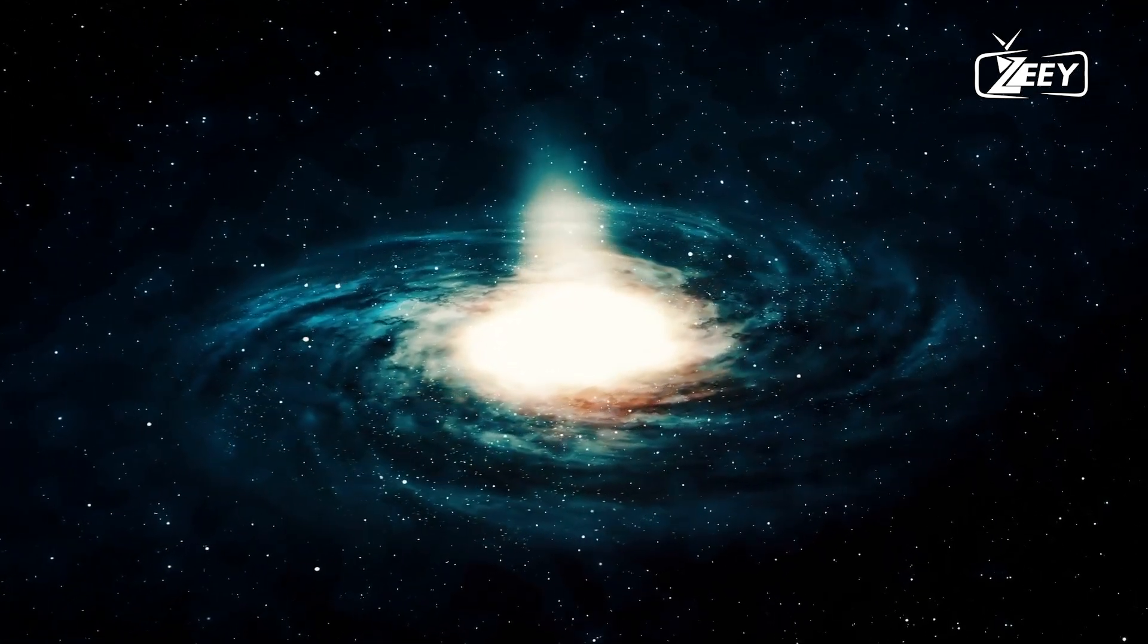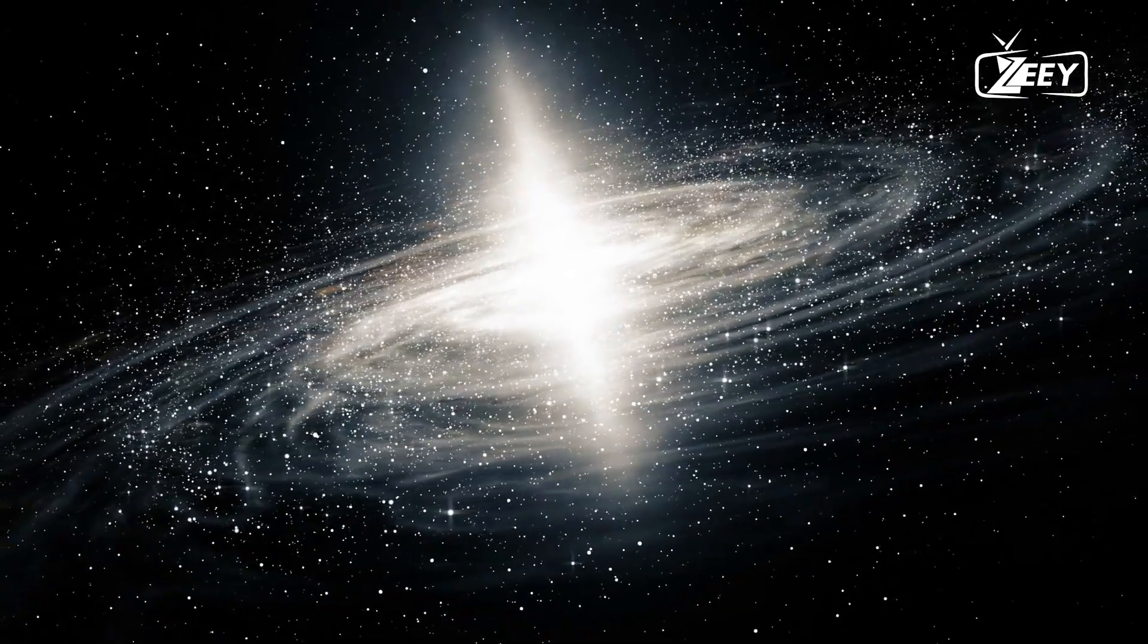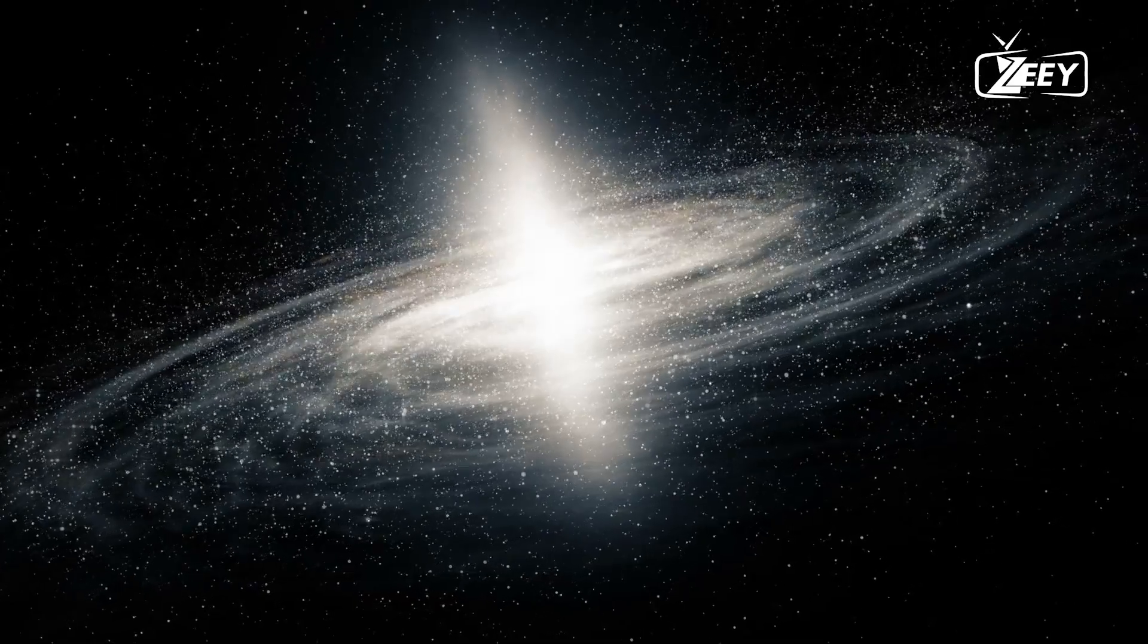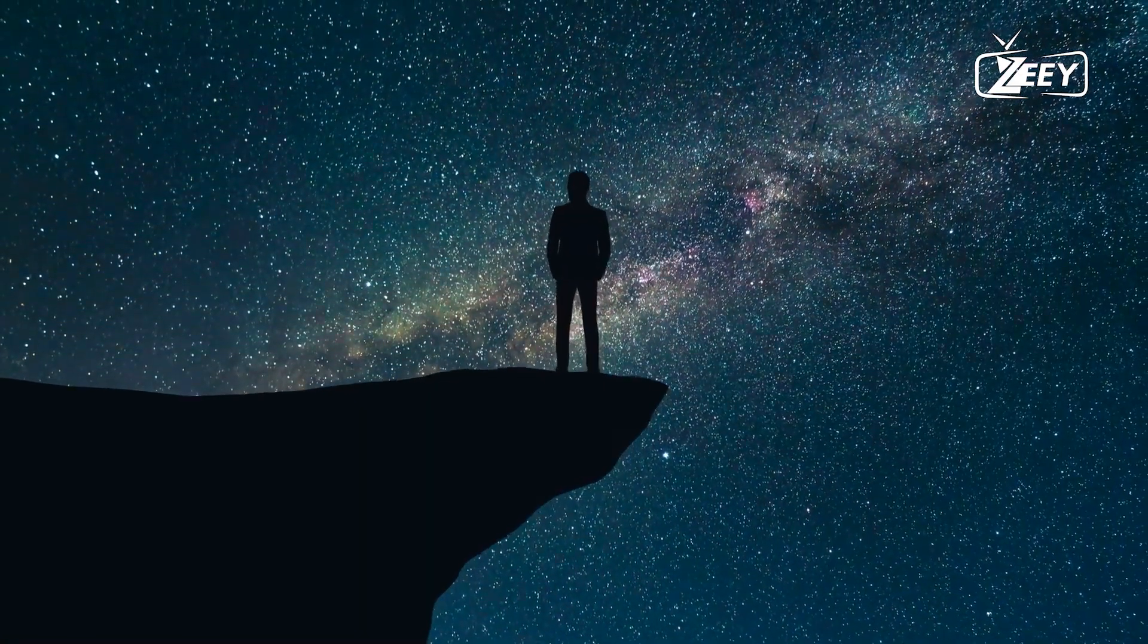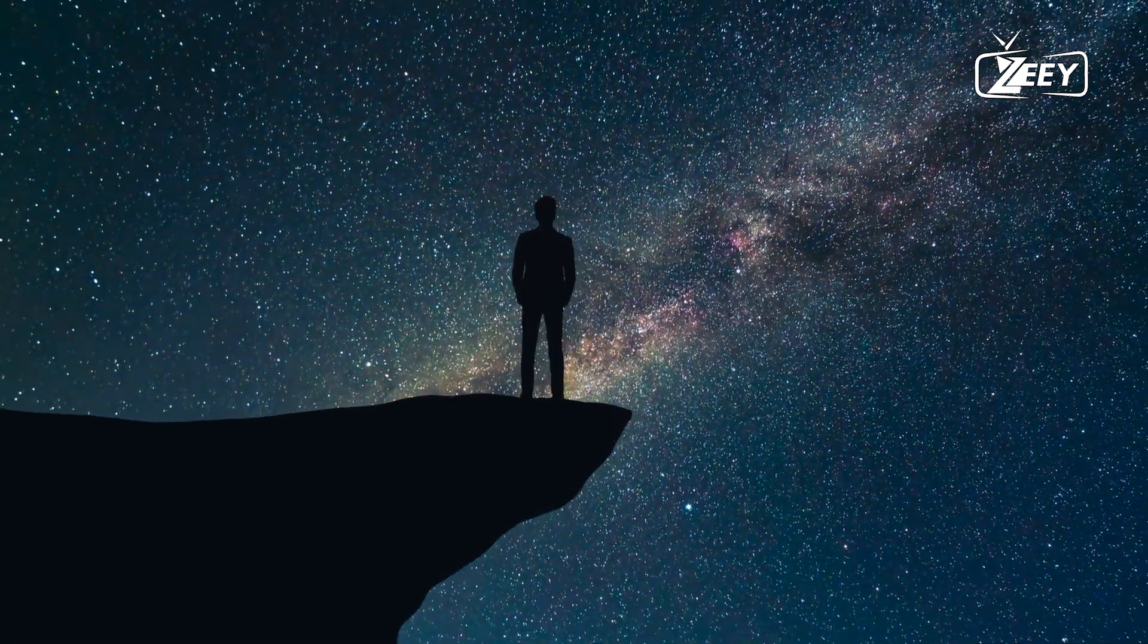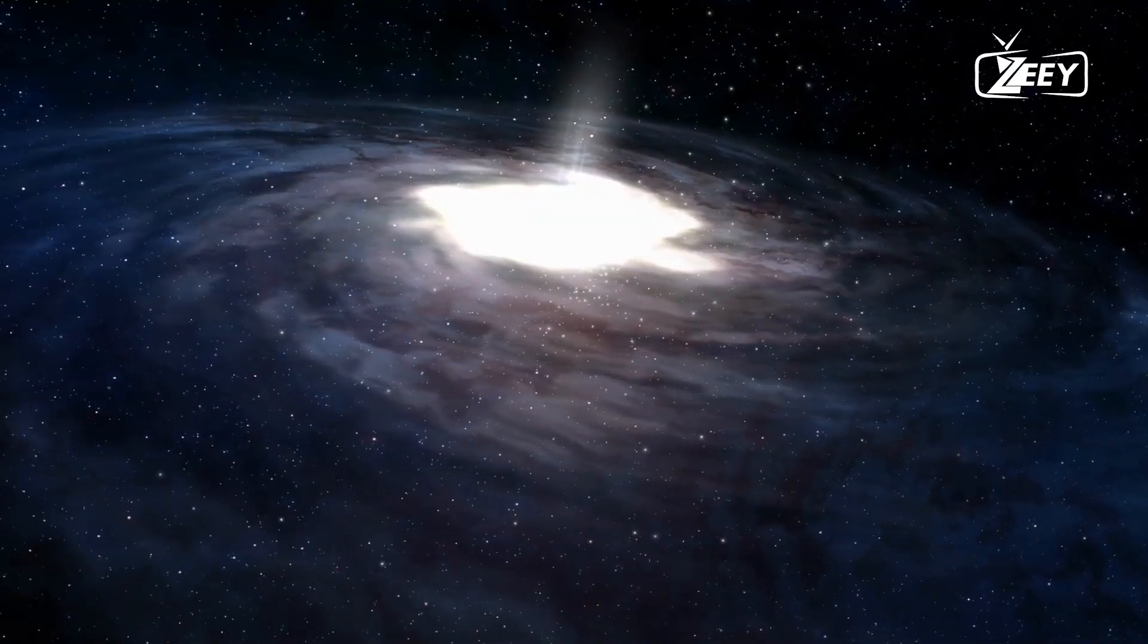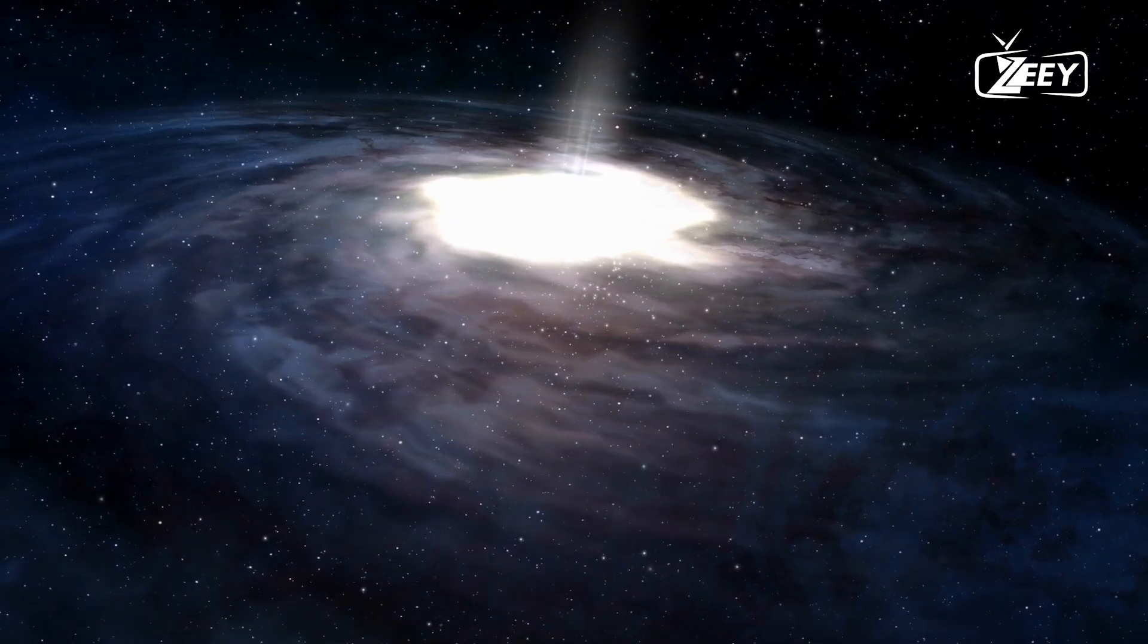The Milky Way, our home, is an elegant spiral of starlight in the cosmic abyss. Our understanding of its design, vast composition, and our place within it has been clouded by the immensity of the task, until now. Enter Gaia, the European Space Agency's celestial cartographer. Launched in late 2013, Gaia embarked on a mission to create the most comprehensive 3D map of our galaxy.